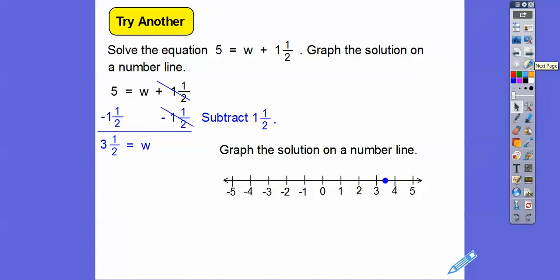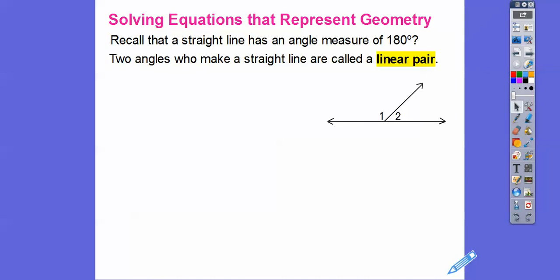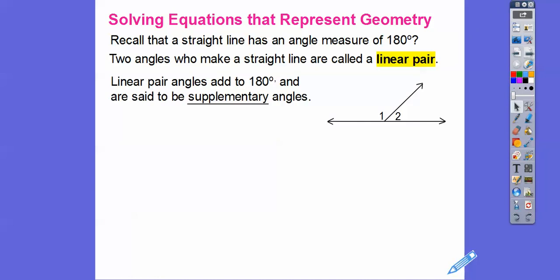Now we're going to solve equations that represent geometry. A straight line has an angle measure of 180 degrees. We can cut that line into two angles — those two angles that make up a straight line are called a linear pair, and they add up to 180. Angles that add up to 180 are called supplementary angles, so angle 1 plus angle 2 adds up to 180 because they make up that straight line.